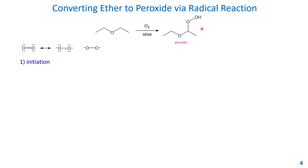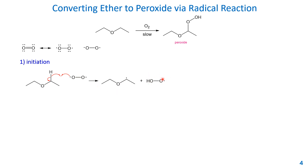The initiation of this reaction involves the alpha carbon: the single bond between the alpha carbon and its hydrogen undergoes homolytic cleavage. The hydrogen radical reacts with the diradical oxygen molecule to form a hydroperoxy radical, and the radical stays on the alpha carbon. So this is the alpha carbon radical on the ether.